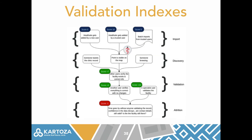Our future plans, once we've completed the Digital Square work, are focused on curation and improvement of the data. We have a concept of a validation index where each HealthSite gets a score based on criteria such as how complete the data attributes are, when the data were last reviewed, and who submitted the data. Each of those things contributes to a total confidence score for each record, and those with low confidence scores can be systematically updated and improved to match the quality of the rest of the database.